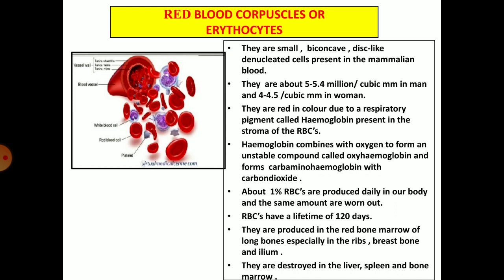1% of the RBCs are produced daily and an equal amount are destroyed or worn out daily. RBCs have a lifetime of 120 days. They are produced in the red bone marrow of long bones, especially ribs, breast bone, and ileum. They are destroyed in the liver, spleen, and the bone marrow. In the embryonic stage, they are produced and destroyed also in the liver and spleen.